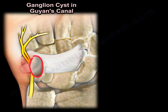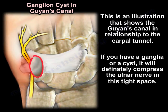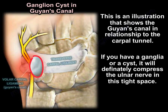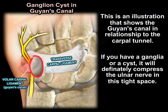This illustration shows Guyon's canal in relationship to the carpal tunnel. As you can see, if you have a ganglion or a cyst, it's definitely going to compress the ulnar nerve in this tight space.